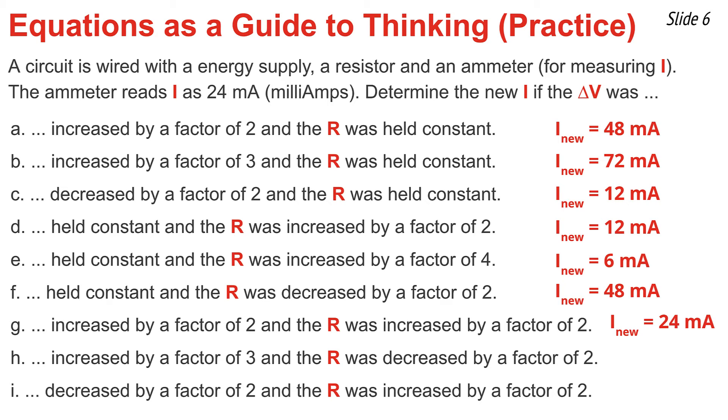In H, you increase delta V by a factor of three, changing 24 milliamps to 72 milliamps. Then R was decreased by a factor of two, causing another increase in I by a factor of two. So take 72 milliamps and double it to get 144 milliamps.